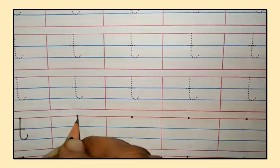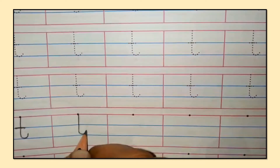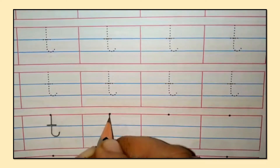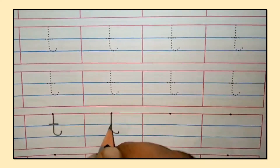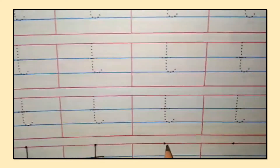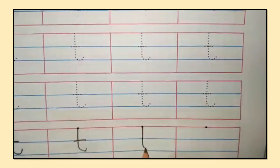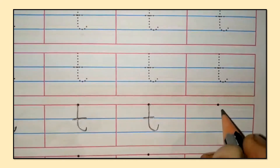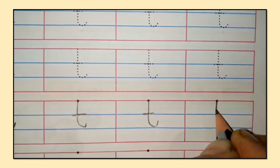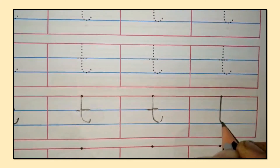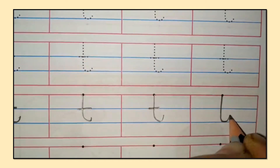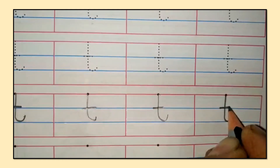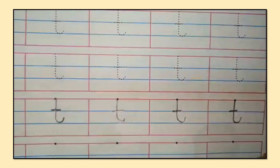Standing line, make a small curve, and a slipping line — small T. Make a standing line, go down, then a small curve, go to the middle of the standing line, and make a slipping line — small T.